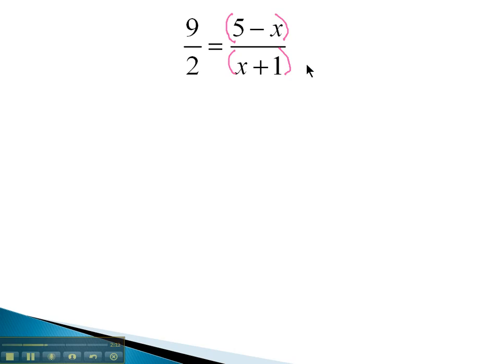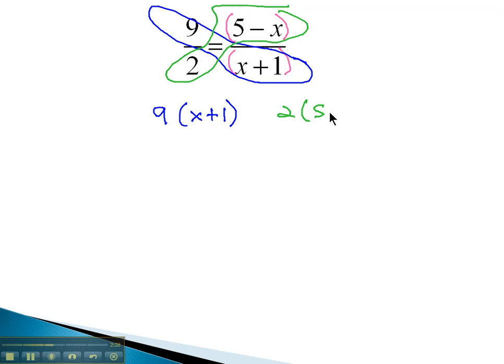Keeping those in parentheses as we calculate the cross product, the first diagonal we get 9 times the x plus 1 in parentheses, showing that we're gonna multiply the entire denominator. And the other diagonal, we get 2 times 5 minus x in parentheses, and we know those cross products must be equal.